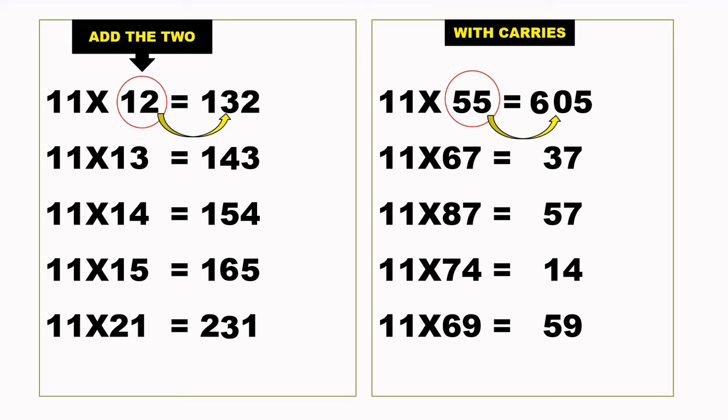We have our 7 for 67, then we add 6 plus 7. The answer is 13, we put the 3 down and we add the carry to 6, so we have 737.